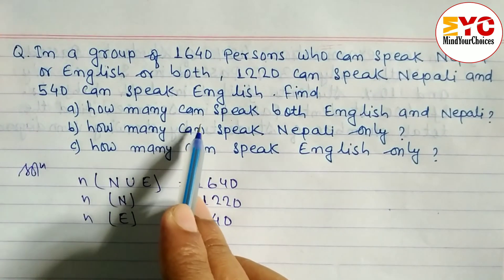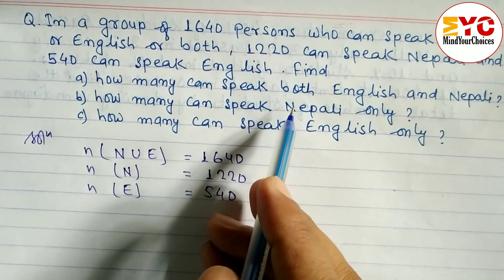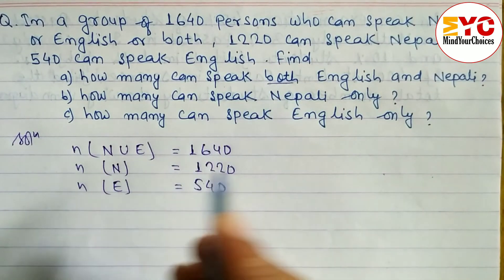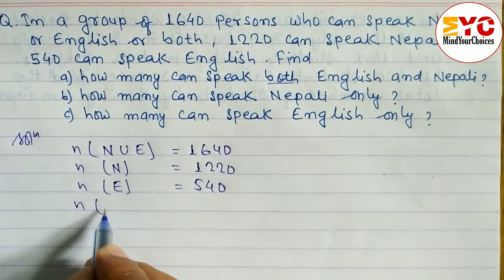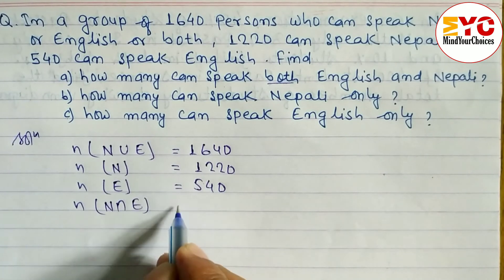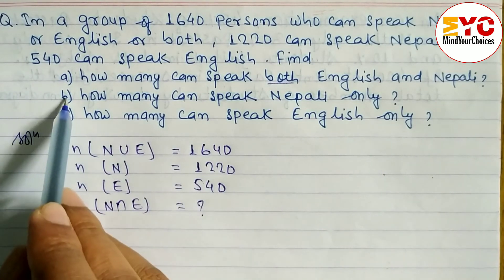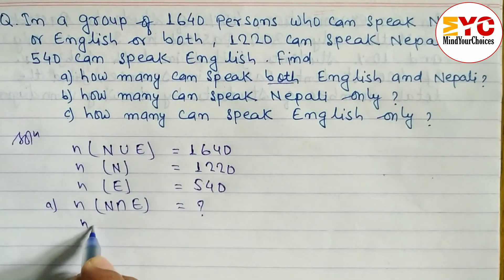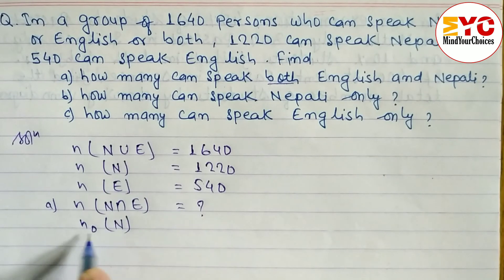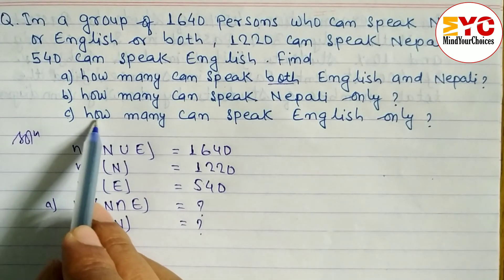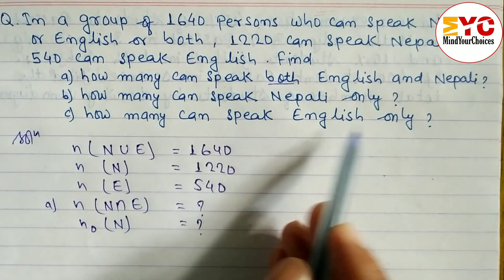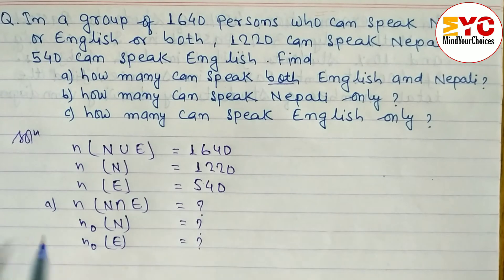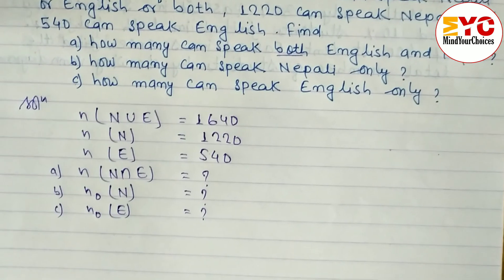For part (a), we have to find how many people speak both English and Nepali — 'both' means intersection, so we need to find N∩E. For part (b), we find how many can speak Nepali only. For part (c), we find how many can speak English only.